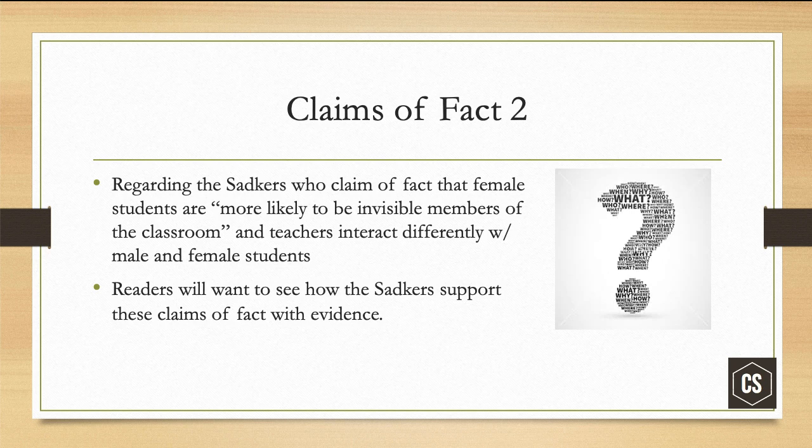For example, two scientists claimed that female students were more likely to be invisible members of the classroom, and that teachers interact differently with male and female students — they were claiming as fact that this happened, that male and female students were treated differently. Readers will want to see how the researchers support those claims of fact with evidence. In other words, we're not just going to take their word for it — we're going to need some proof.